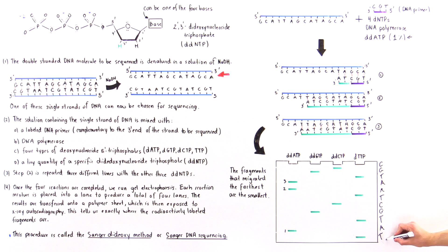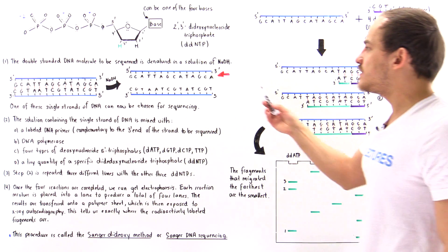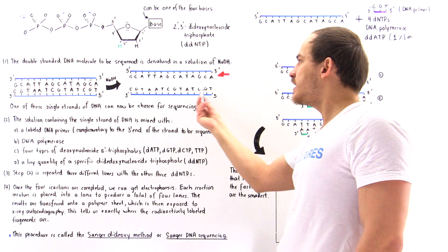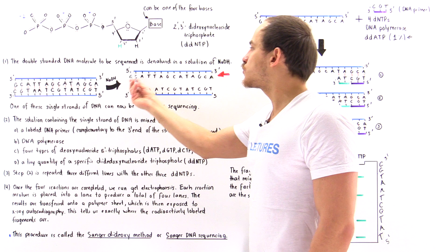So this is basically the five prime end and this is the three prime end of this complementary DNA sequence that is complementary to this DNA that we essentially began with.